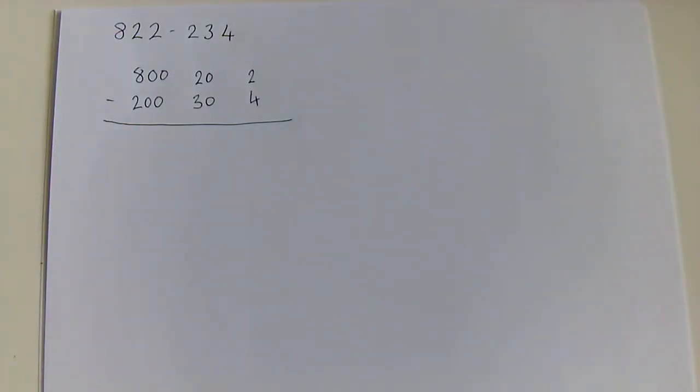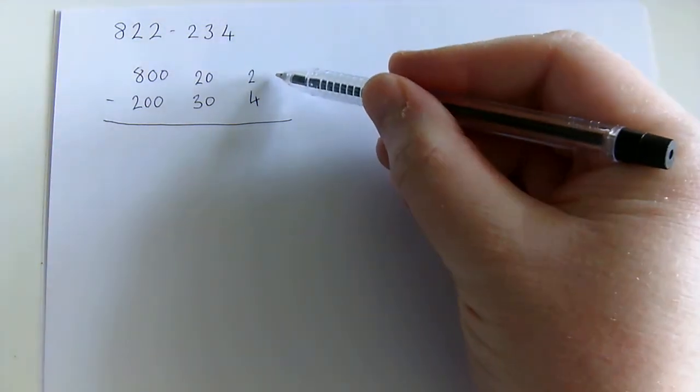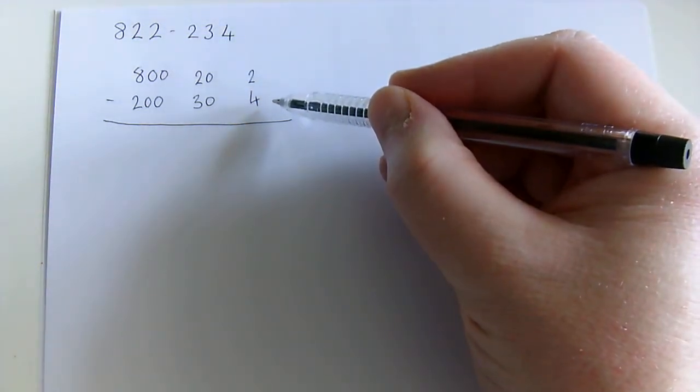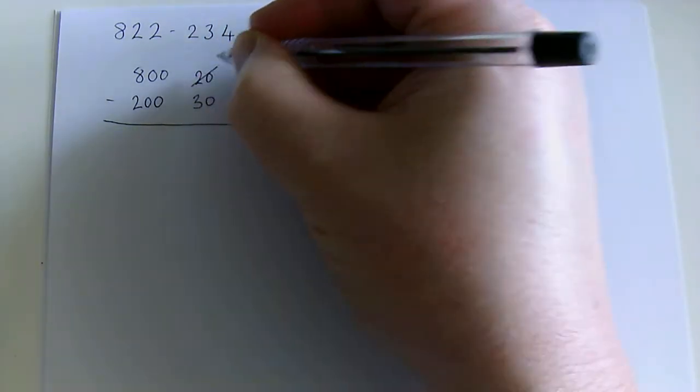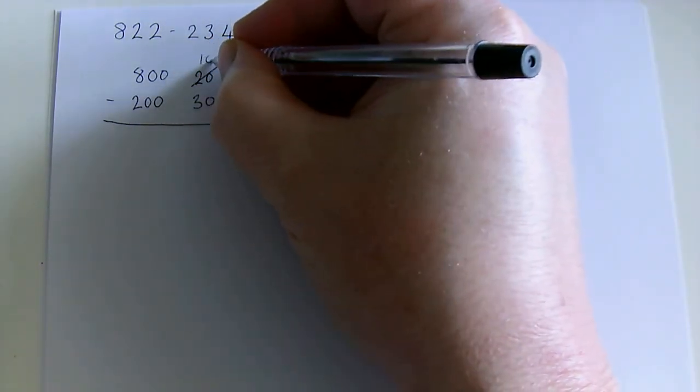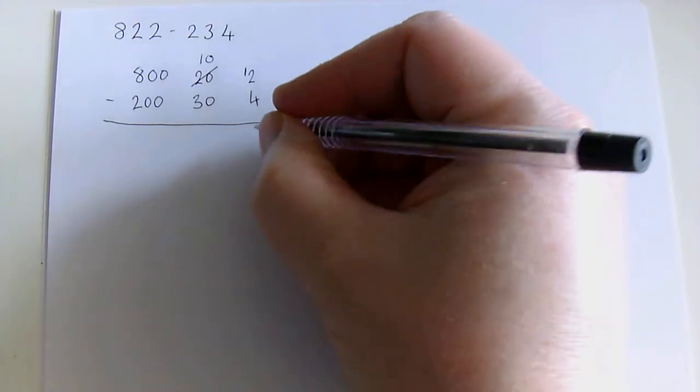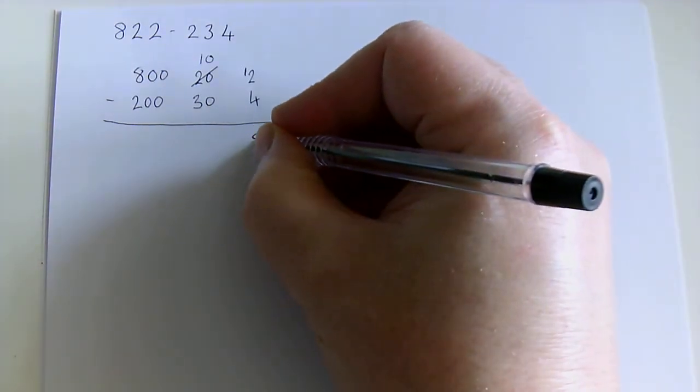We need to start with the units where you do a subtraction sum. So we're doing 2 subtract 4, which we can't do in real life. So we have to move a 10 across from the tens column. So the 2 becomes 12. 12 subtract 4 is 8.